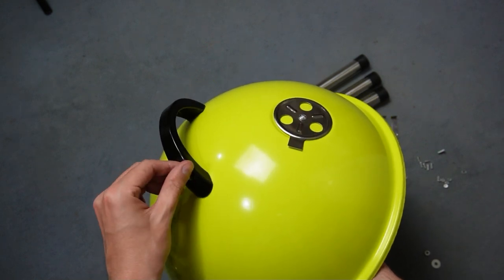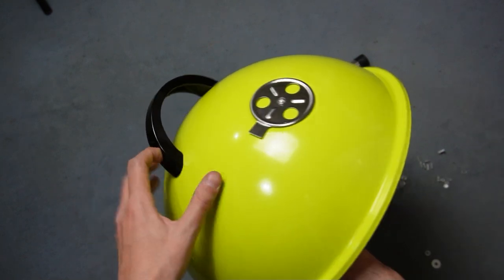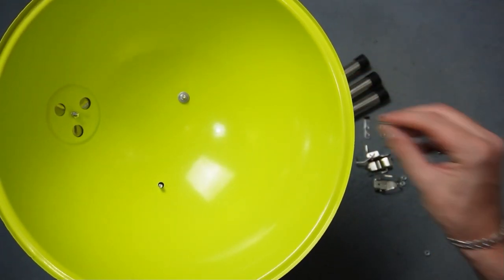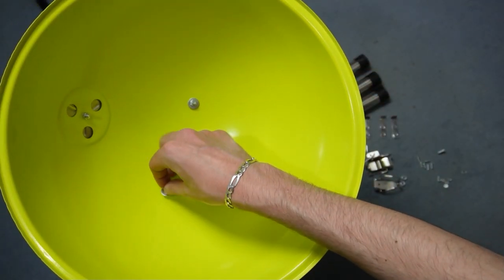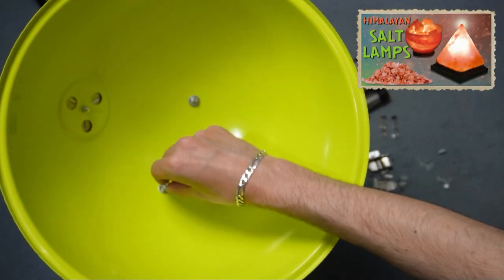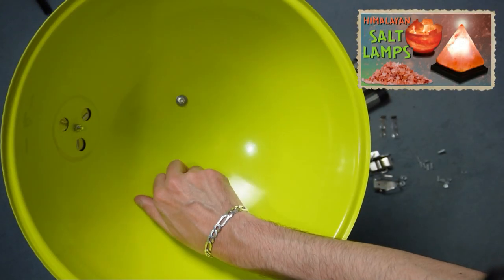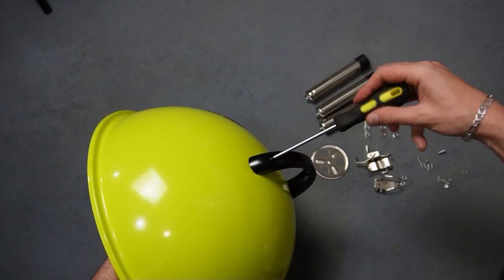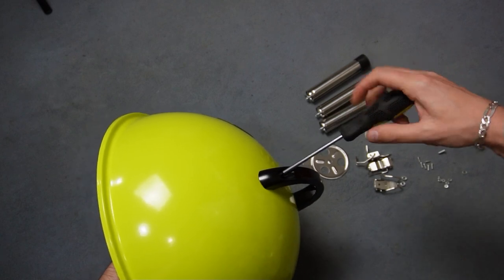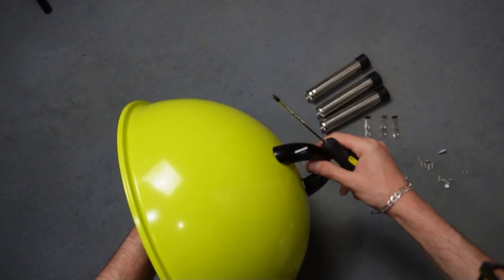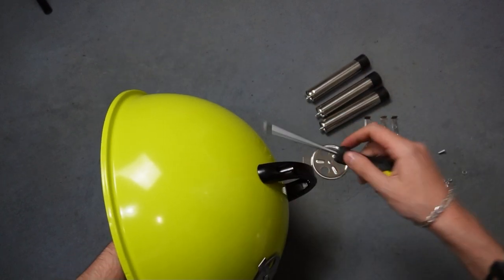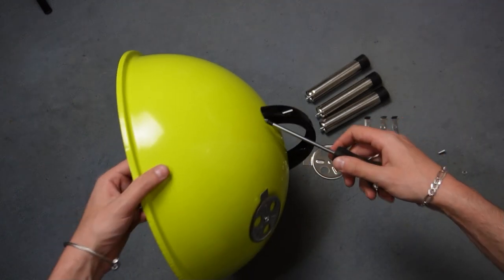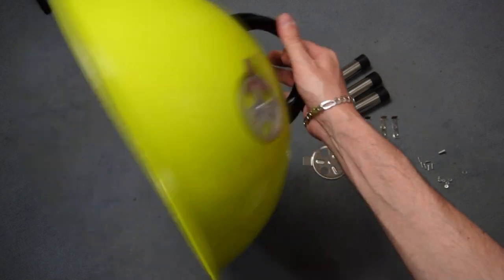The tools for assembling the barbecue are not included so you must have a screwdriver and pliers. Take pliers and hold the nuts while tightening the bolts securely with a screwdriver. I am holding the nuts with my hand but I will tighten them after I make the video. The lid is fully assembled.